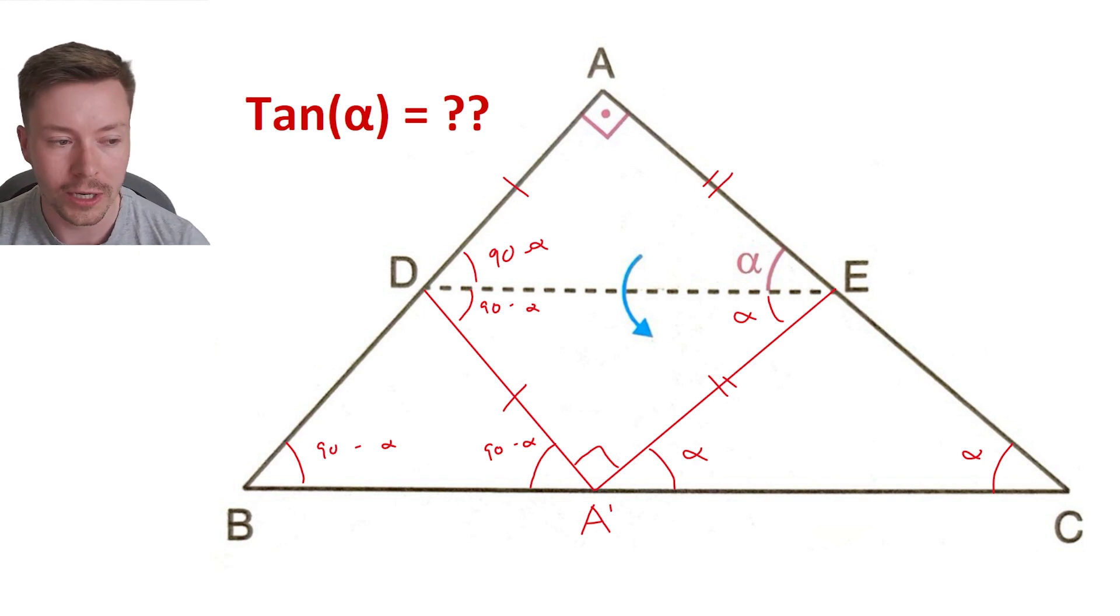So we can get this angle now B A apostrophe D and the one just next to it E A apostrophe C, and that means that because those two base angles are equal, we've got isosceles triangles now down here.